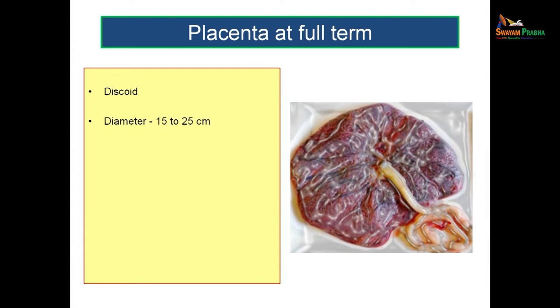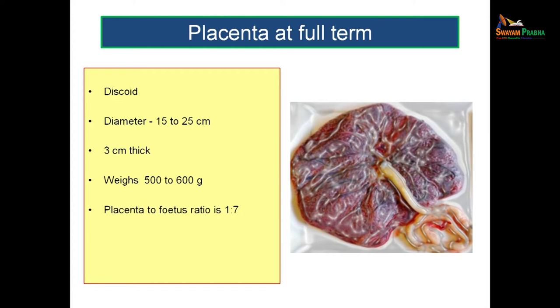At full term, the placenta looks like a disc — it will be discoid, with a diameter of roughly 15 to 25 centimetres and a thickness of roughly 3 centimetres. The weight is roughly half a kilogram — 500 to 600 grams. The ratio of placenta to fetus is 1:7. The placenta is usually expelled 30 minutes after birth of the child, which is why it is also known locally as the afterbirth.